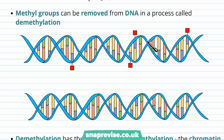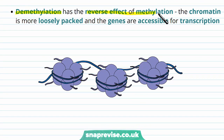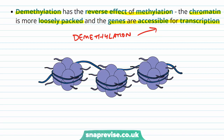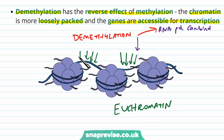If we want a gene to be turned on again, we can have methyl groups being removed from the DNA. This process is called demethylation, and it has the reverse effect of methylation. The chromatin is more loosely packed and the genes are accessible for transcription. The transcription factors and RNA polymerase can now bind, and also those proteins which were tightly packing the chromatin now leave because those chemical tags are no longer attracting them. Now we have loosely packed chromatin, which is the euchromatin, and because it's loosely packed, expression can occur because the RNA polymerase and transcription factors can access those genes.